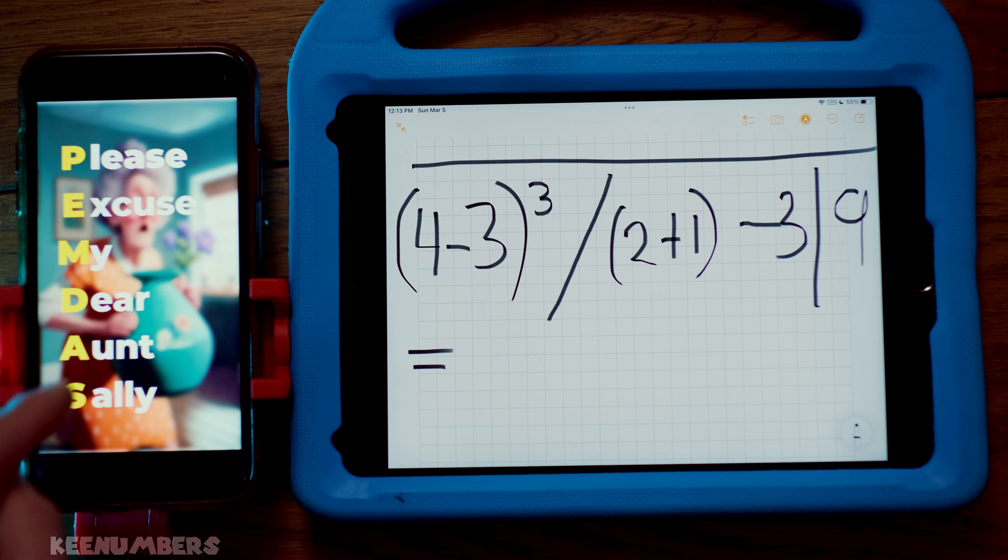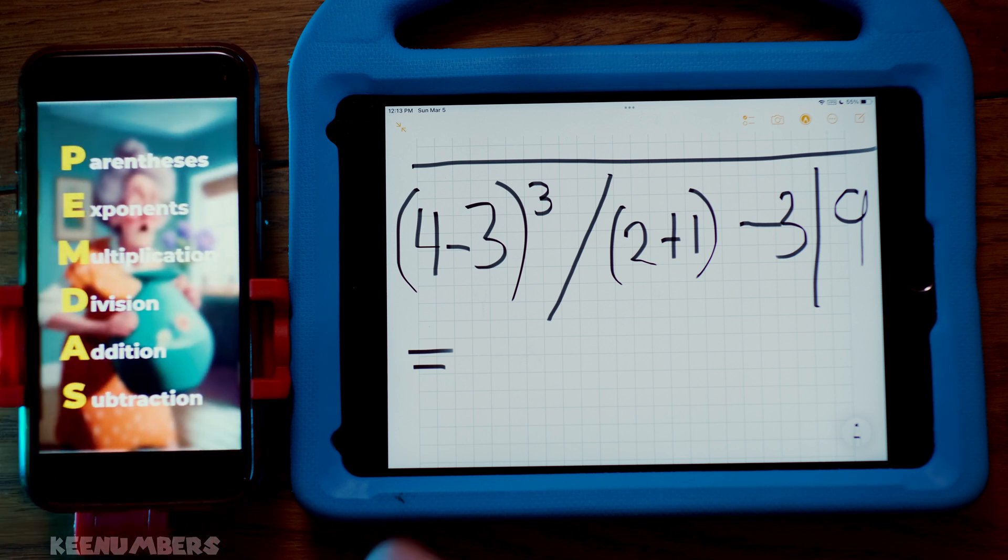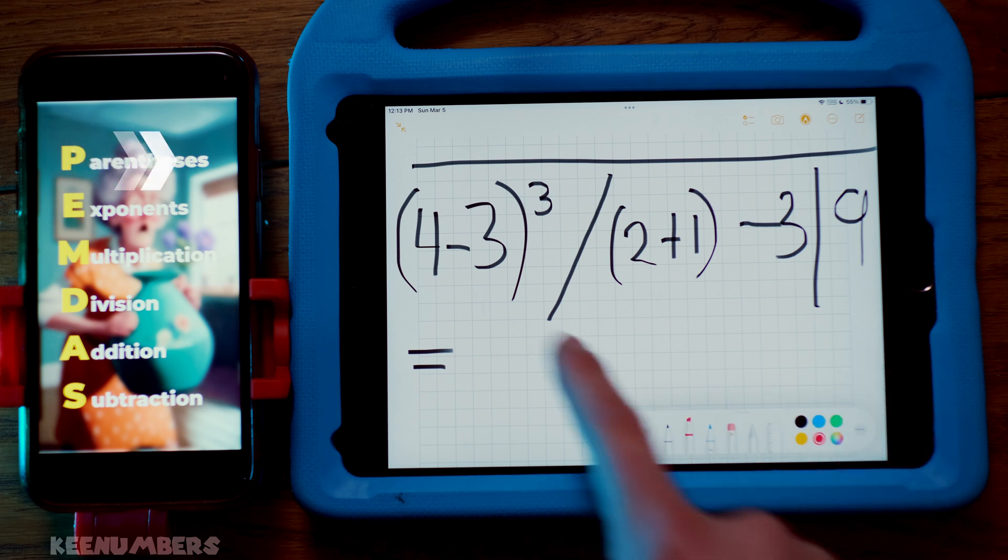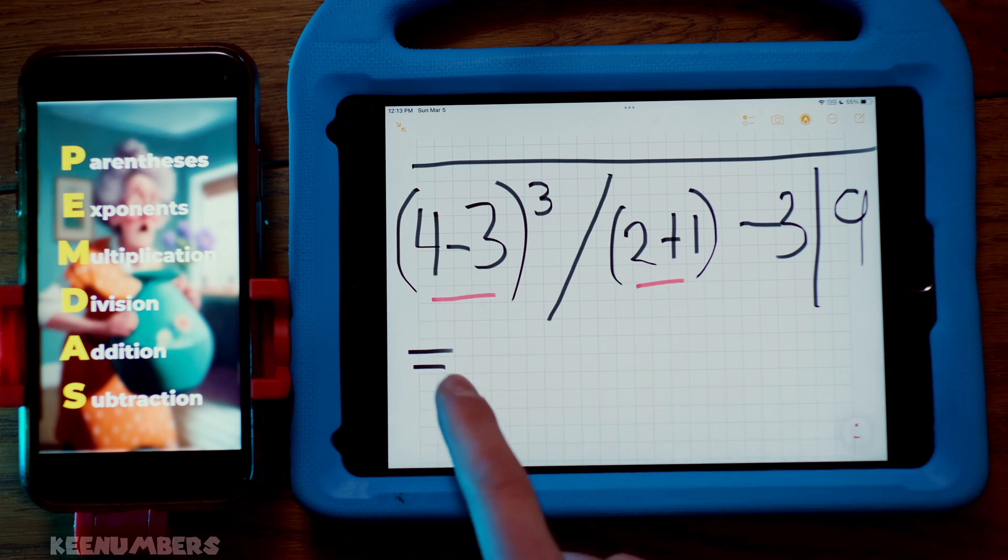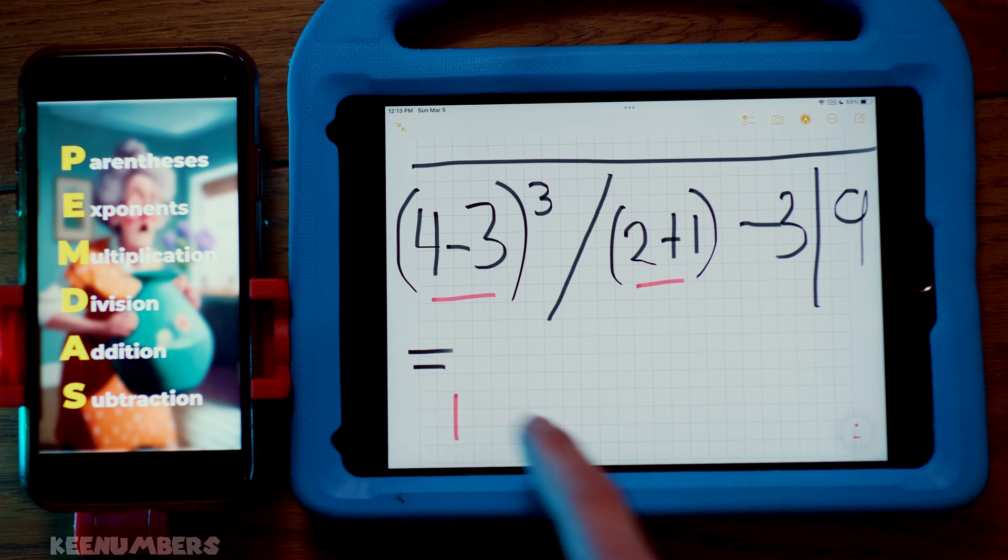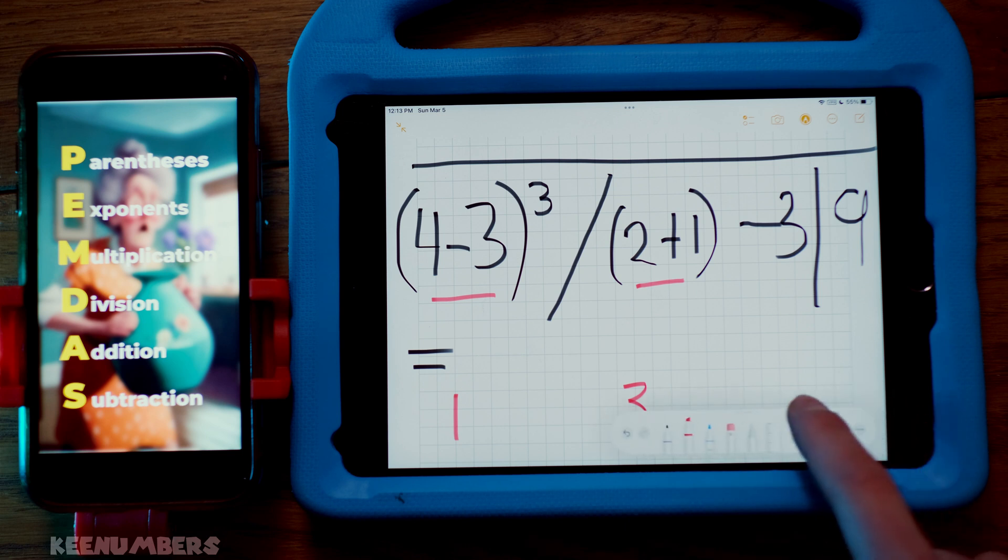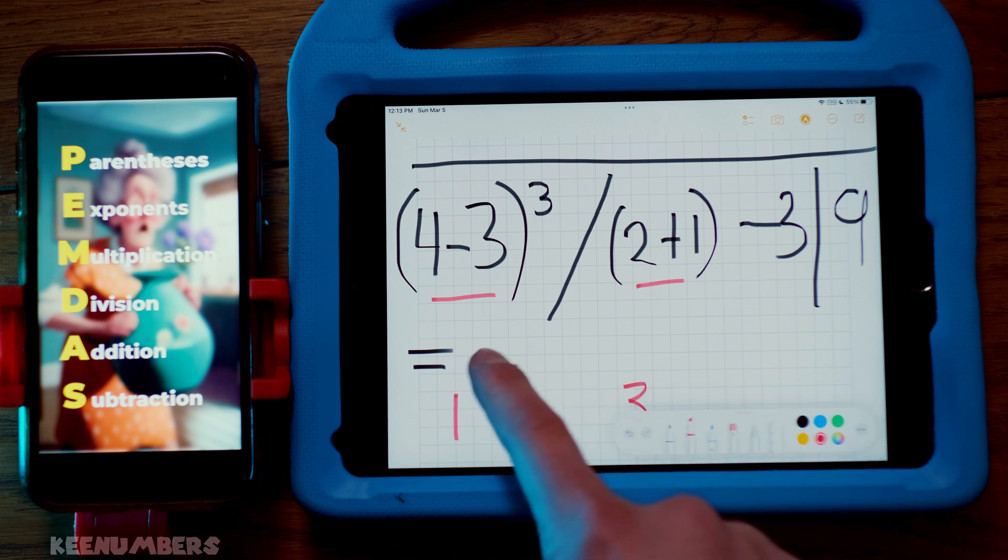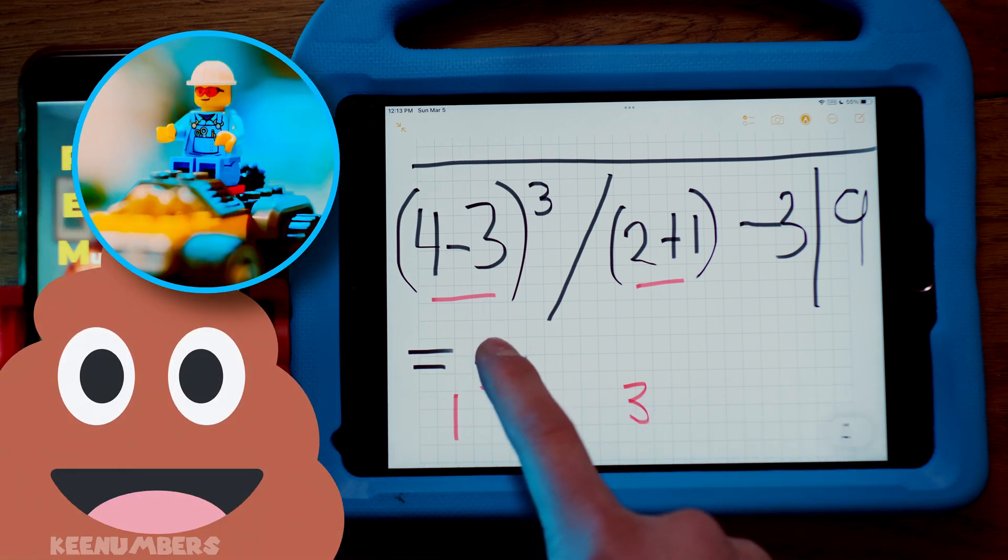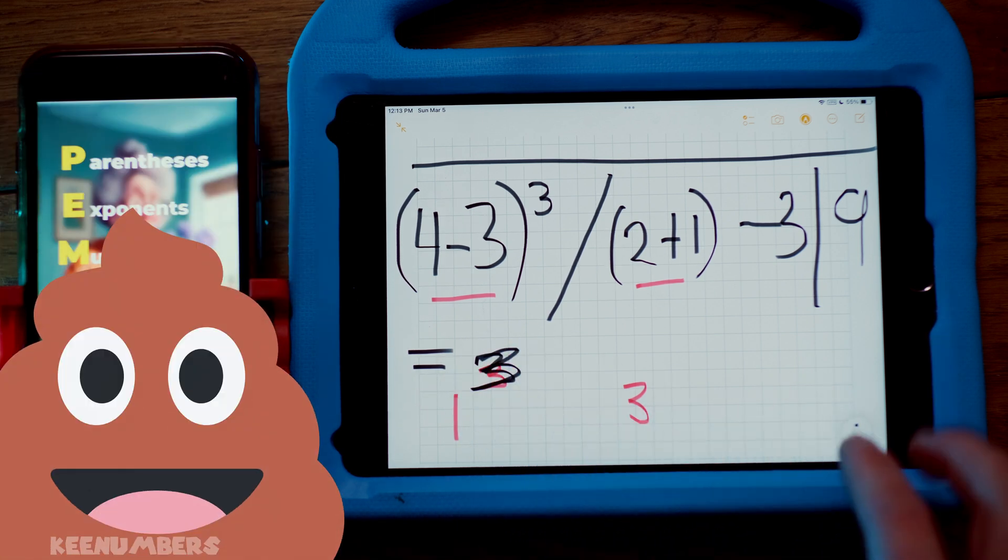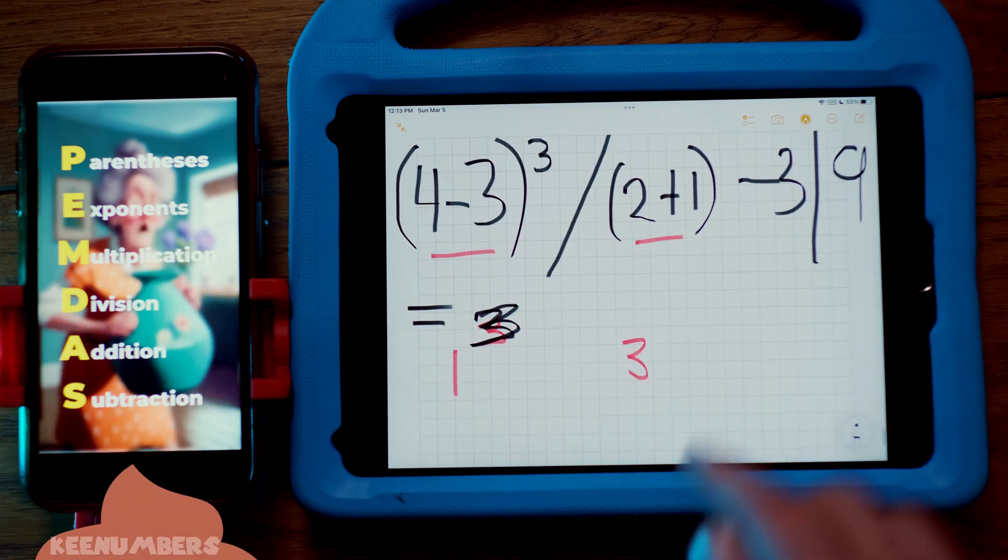Please excuse my dear Aunt Sally. You're going to start with parentheses first. Look inside those parentheses at the far left. You've got 4 minus 3, and over here you've got 2 plus 1. So you know how to do that. 4 minus 3, hey, that's just 1. And then over here, 2 plus 1, that's just 3. And then you're going to continue with the exponents.